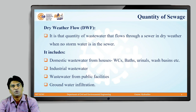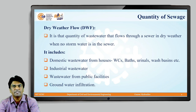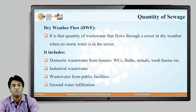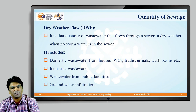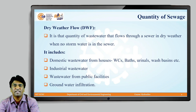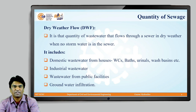Dry weather flow includes domestic waste water from sources such as water closets, bathrooms, urinals, and wash basins. Along with that, we also consider industrial waste water, waste water generated from public facilities, and ground water infiltration. We will also learn how to find out the infiltration quantity in further detail. These are the sources considered for finding out the dry weather flow; storm water flow is not included.